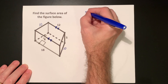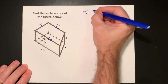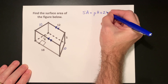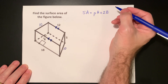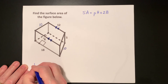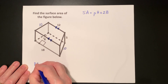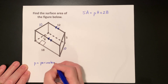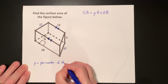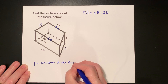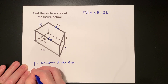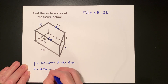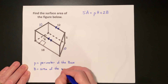Any prism has a surface area of pH plus 2B. In this formula, P stands for the perimeter of the base, and B stands for the area of the base.